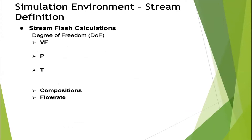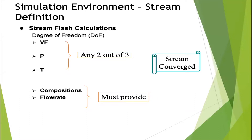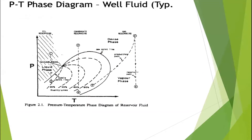When you select a stream in the simulation environment, you must specify at least two of the three parameters: vapor fraction, pressure, and temperature. You also need to specify the composition of each component and the flow rates. Satisfying the degrees of freedom allows the stream to fully converge. Once the stream is converged, with property packages defined and components specified, the first step is complete.